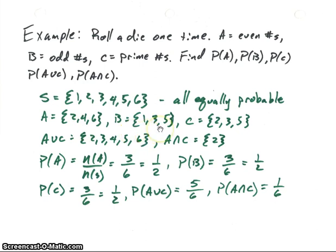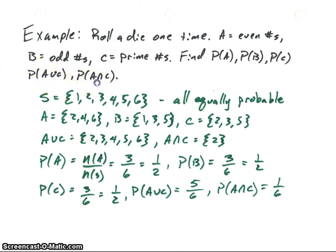B is the odd numbers: {1, 3, 5}. And C is the prime numbers: {2, 3, 5}. Now let's also find the sets A union C and A intersect C. A union C is {2, 3, 4, 5, 6}, and the intersection of A and C is just the element {2}.